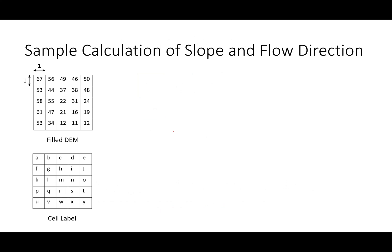What we see here is a DEM. This DEM is a filled DEM, which means there are no sinks. Each cell has an elevation value and the cell size in this case is one unit — you can assume one meter or one foot. We have labeled each cell using alphabetical letters. Now let's see how we can calculate slope for one of these cells. I'm going to use cell M and see how we can get the steepest downslope from M.